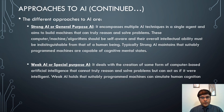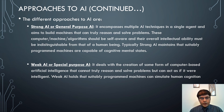The first approach is strong AI or general purpose AI, which encompasses multiple AI techniques in a single agent and aims to build machines that can truly reason and solve problems. These machines should be self-aware and their overall intellectual capability must be indistinguishable from that of a human being. Strong AI maintains that suitably programmed machines are capable of cognitive mental states.